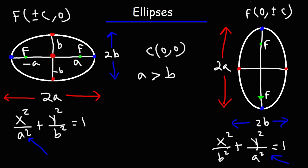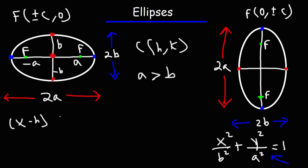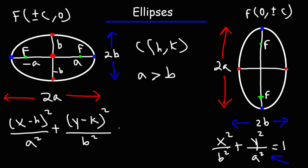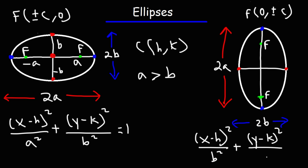What happens if we have an ellipse not centered at the origin? If it's not centered at the origin, the coordinates of the center become h comma k. The equation changes to: x minus h squared over a squared plus y minus k squared over b squared equals 1. For the vertical form, we replace x with x minus h squared over b squared and y with y minus k squared over a squared.